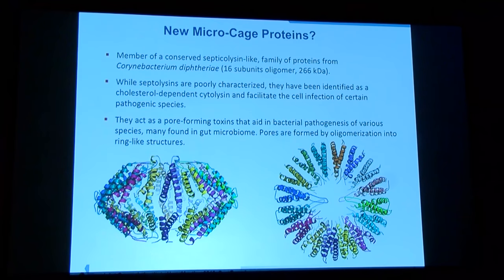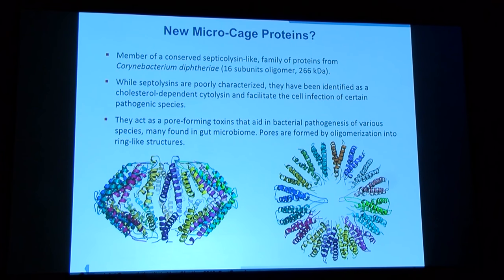We also discover completely new things. This particular protein is a micro cage and may belong to a family of septolycins — potentially toxins that form some kind of pore structures. But even after solving the crystal structure, we don't know what they do.